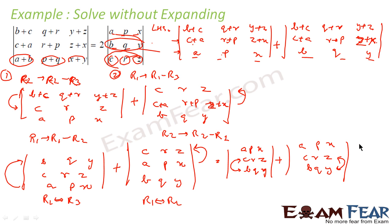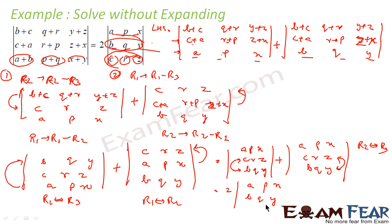So I am swapping R2 with R3 in both cases. And they are actually the same, so I can say the result is 2 times the determinant of a, p, x; b, q, y; c, r, z. And that is my answer. So in this step I swapped rows and added both determinants together. Because both were the same, it becomes 2 times this determinant. After swapping R2 and R3, I get this answer.